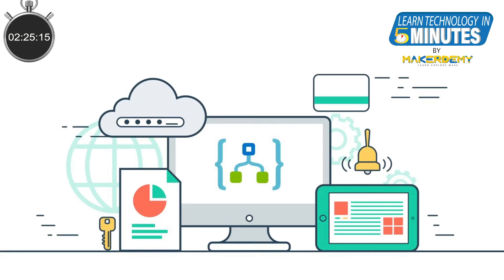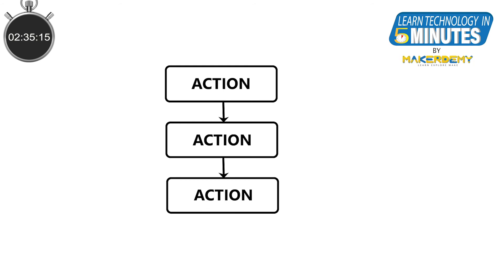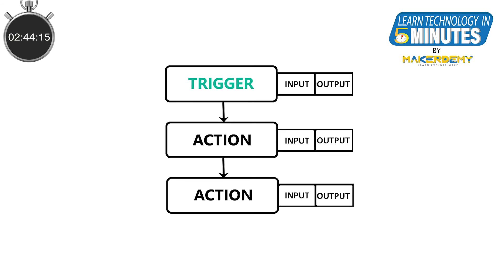Logic Apps is a service that allows you to schedule, automate, and orchestrate tasks. It just consists of actions and conditions to create workflows or processes. The first action is usually a trigger. Each action has an input and output. You can define multiple actions and use the output of one action as the input of another, thereby creating complex workflows.